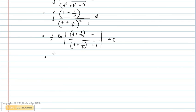Now, substituting t back as e power x, we get half of ln (e power 2x minus e power x plus 1) divided by (e power 2x plus e power x plus 1), plus C, which is option T.